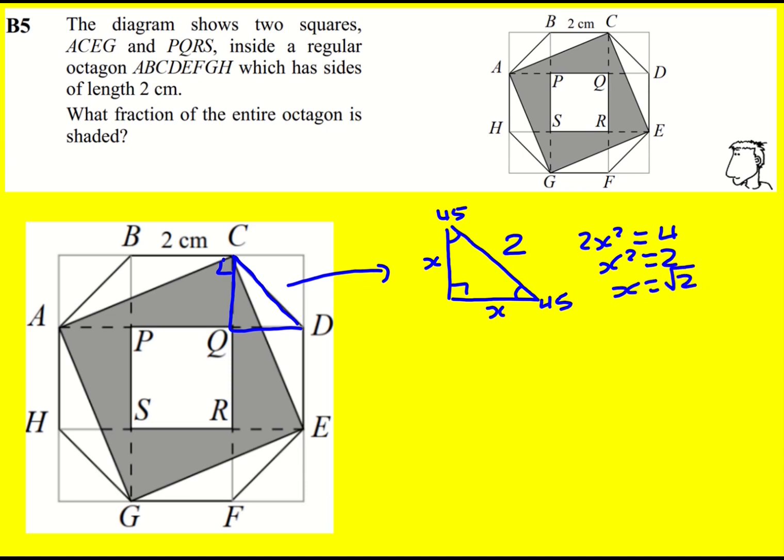It's actually quite a good fact to know that if you have this sort of situation and then let's say the length is L, then the two others will be L over root 2. But I've derived it here in the case of 2. So now I know that this is root 2 and this is root 2.